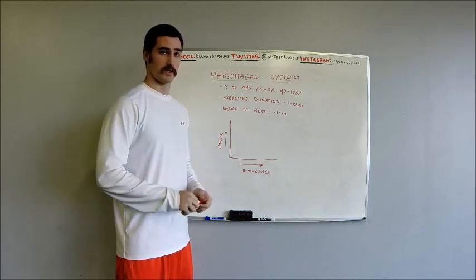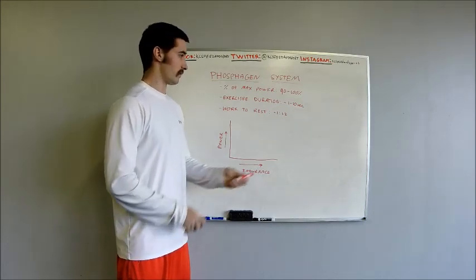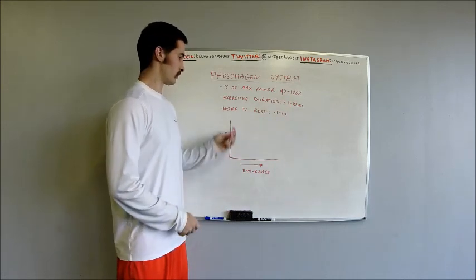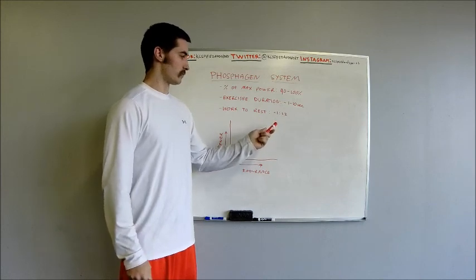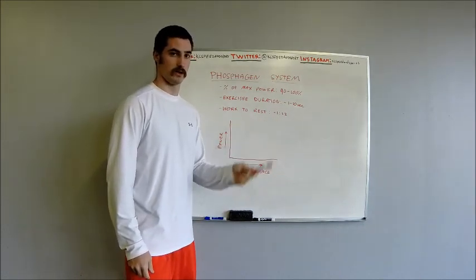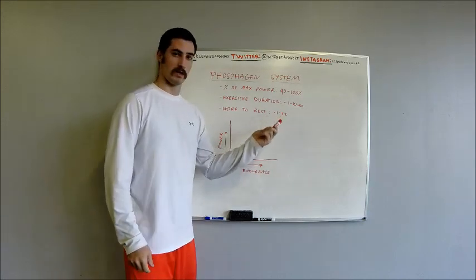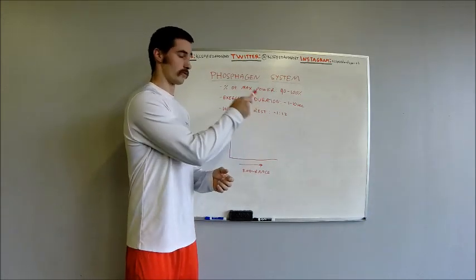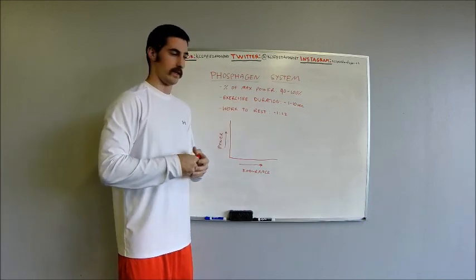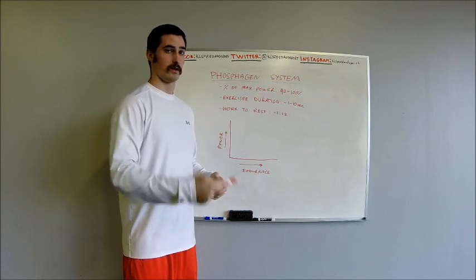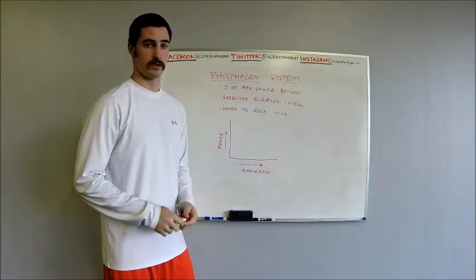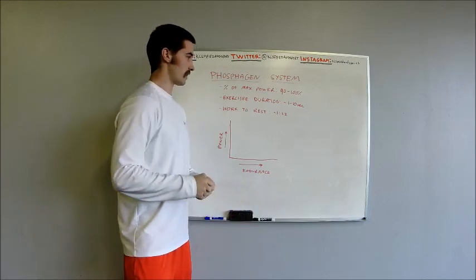Now when we're training the phosphagen system, obviously if our goal is max power right here, we need a lot of rest. So the work to rest ratio is anywhere from around 1 to 12. It can be even as high as 1 to 20 work to rest. Now we do that because if we are trying to improve at 95 percent, that's going to be very taxing to our body. And so we need a lot of rest to recover to get back to 100 percent or at least close to 100 percent before our next set in our training.